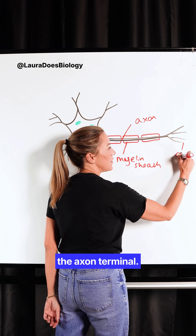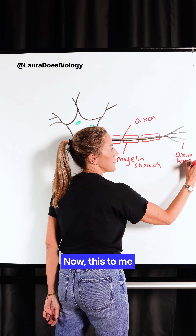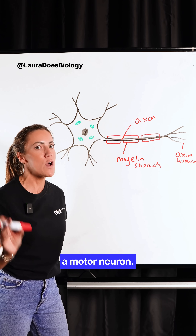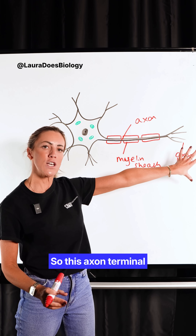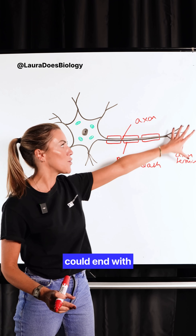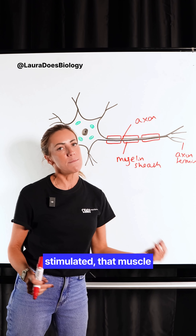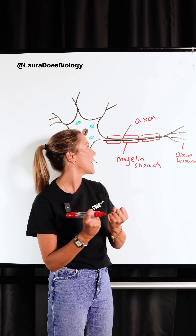Here we've got the axon terminal. Now, this to me looks very much like a motor neuron. So this axon terminal could end with a muscle, and when stimulated, that muscle would contract.